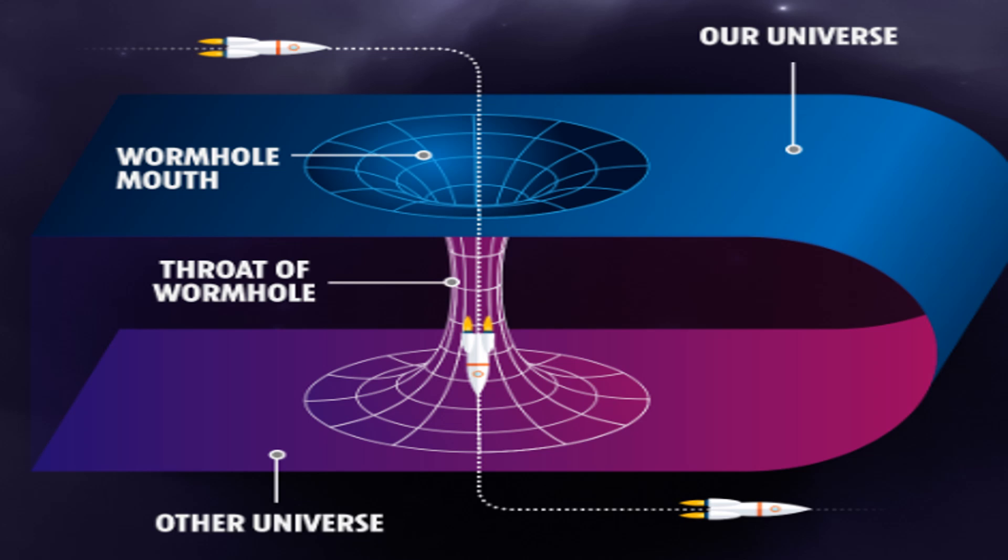Depending on how the ends of the wormhole are manipulated, they could potentially allow for travel not just in space but also in time, leading to paradoxes and challenges to our understanding of causality itself.